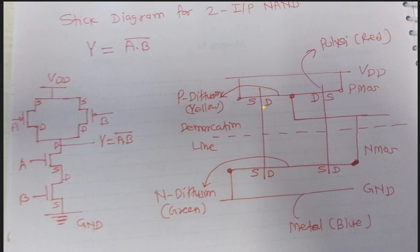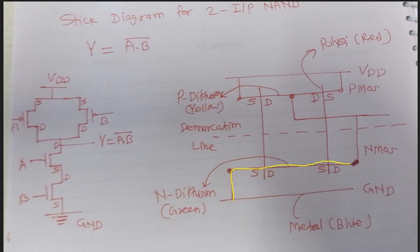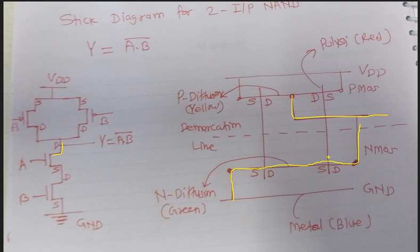The source and drain of A in the pull-up network is connected to the drain-to-source of A in the pull-down network. The source terminal is connected to ground. Then source to drain — the drain terminal is connected to the output. The drain terminal of both A and B is connected to the output, and the output is taken from between the two drain terminals of the pull-up network. The pull-down network is connected to this output as well.